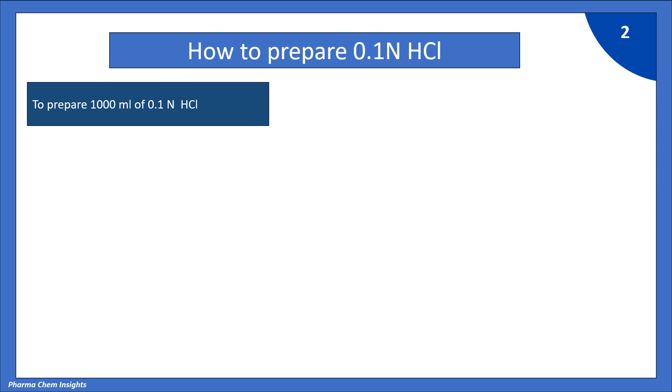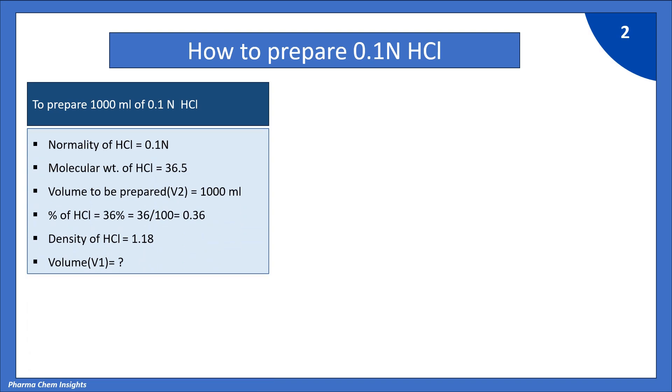First we will see the preparation of 0.1 normal HCl. To prepare 1000 ml of 0.1 normal HCl, we have data: normality of HCl is 0.1 normal, molecular weight of HCl is 36.5, volume to be prepared V2 is 1000 ml, percentage of HCl is 36%, so 36 divided by 100 equals 0.36, density of HCl is 1.18.